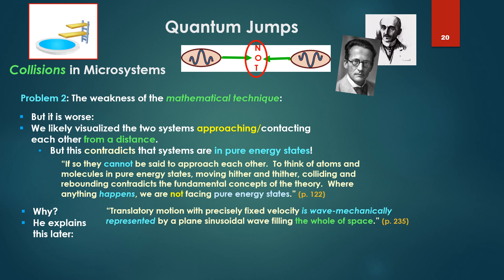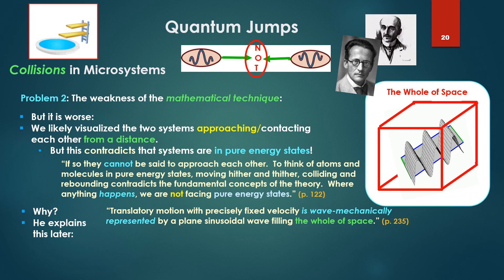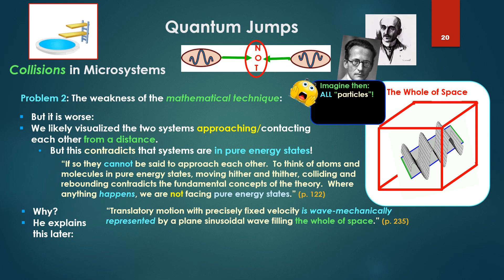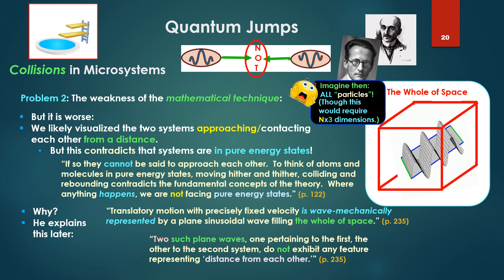Translatory motion with precisely fixed velocity is wave mechanically represented by a plain sinusoidal wave filling the whole of space. We'll take my favorite cube there, the whole of space. One might imagine then what do all the particles look like? They're also all particles filling the whole of space. Though it's free to renounce, this would require n being the number of particles times three dimensions, and then a godly number of dimensions. For three particles, nine dimensions.